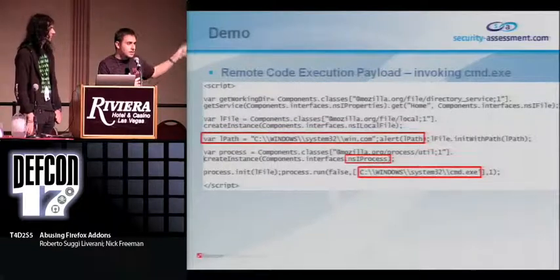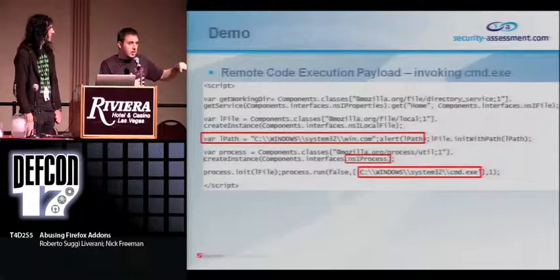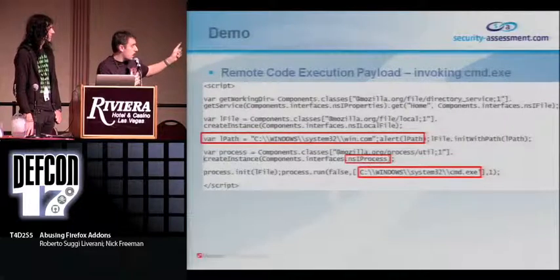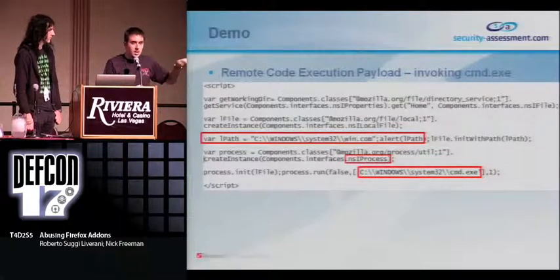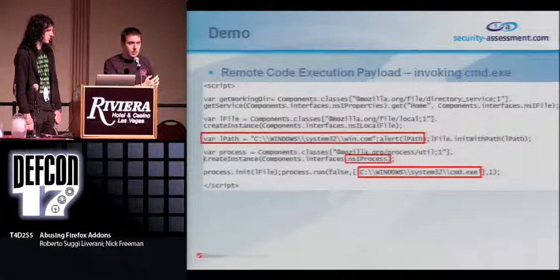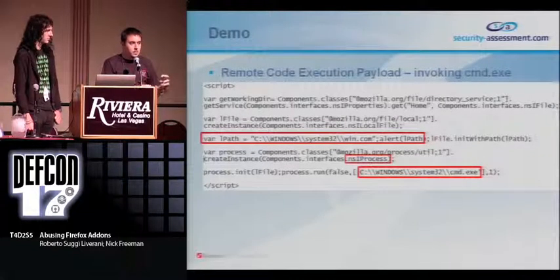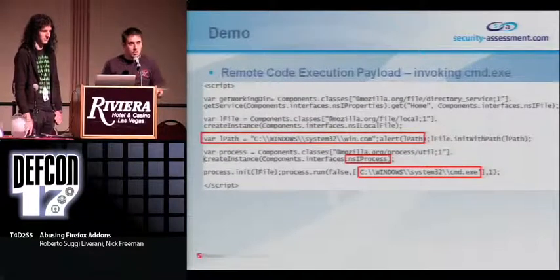I'm going to show remote code execution through Cool Previews. You can use JavaScript to call XPCOM components — in this case using NS local file and NS process to call win.com, and win.com will call cmd.exe and pop up a CMD shell. That's an example of using JavaScript to interface with XPCOM components and achieve code execution.